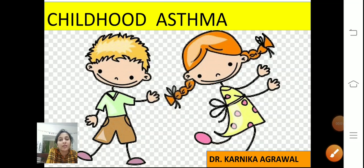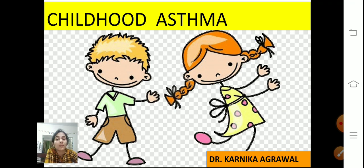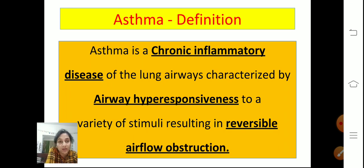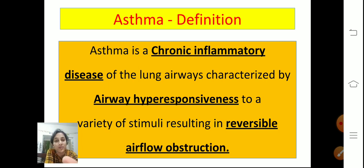Good morning everyone. Today I will take your class on childhood asthma. Asthma is a chronic inflammatory disease of the lung airways characterized by airway hyper-responsiveness to a variety of stimuli, resulting in reversible airflow obstruction. These three keywords are important: it is a chronic inflammatory disease, characterized by airway hyper-responsiveness, and it results in reversible airflow obstruction.